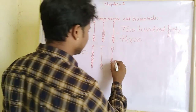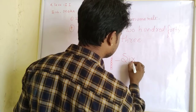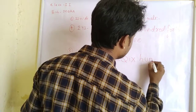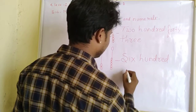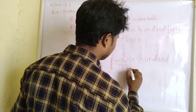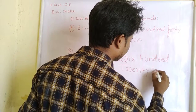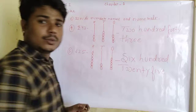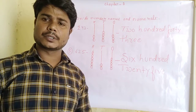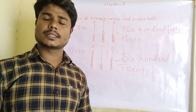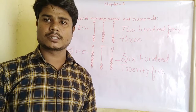Then we write the number name: six hundred twenty-five. Hope you all have understood how to represent the given number on an abacus, as well as how to write number names and numerals. Thank you.